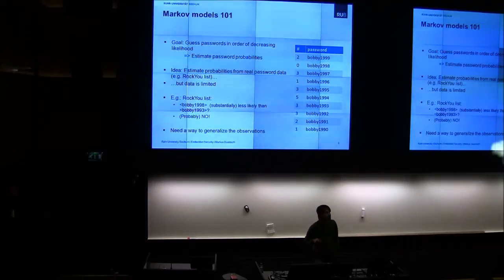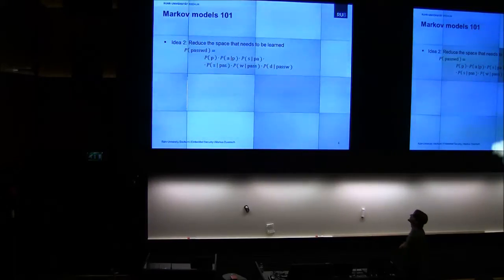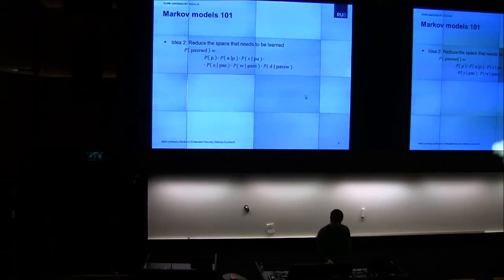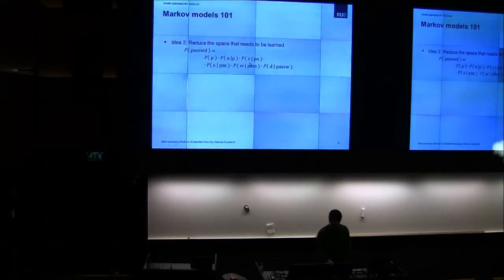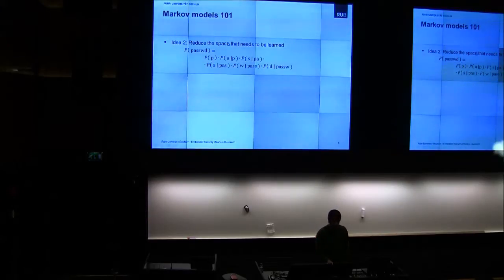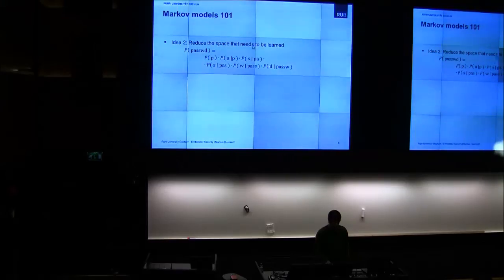We need a way to generalize the observations from the RockYou list, and the way we do it is using Markov models. One step before getting there: we can model the probability of a password like 'PASSWORD' as a sequence of conditional probabilities — the probability the first letter is P, then given that, the next is A, then given PA the next is S, and so on. That's just a fancy way of writing that probability.